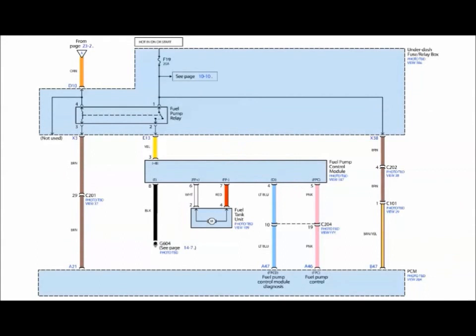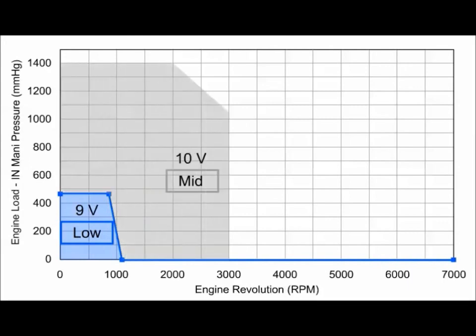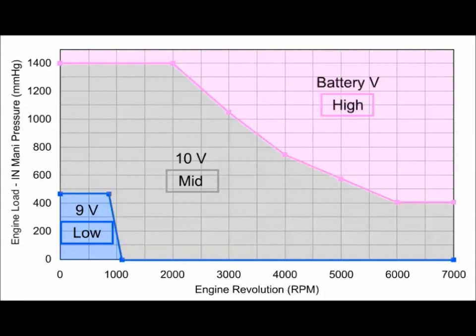Newer vehicles have a separate fuel pump control unit that changes fuel pump speed with driving conditions. The fuel pump will operate in three modes, low, mid, and high. When engine speed and load are low, the fuel pump receives 9 volts. Then as engine speed and load increase, the voltage will increase to 10 volts, and then battery voltage under heavy load and high engine speed.